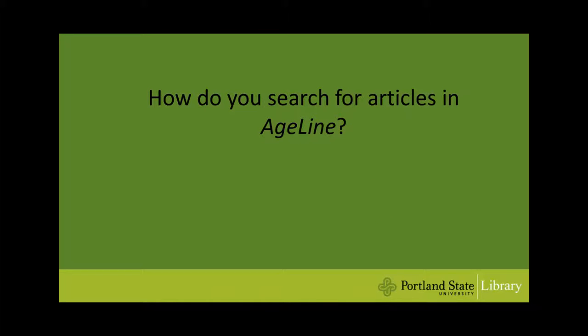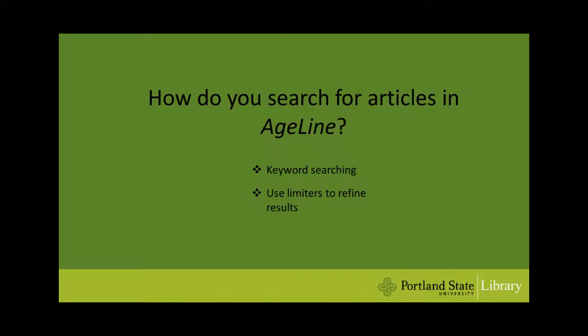How do you search for articles in Ageline? You can search by author, title, subject, or by keyword, as you would in other databases. And like other databases, you can use limiters to refine your results. However, Ageline does not give you the option to limit your results only to peer-reviewed sources, so you have to use some other strategies to find the best and most credible scholarly sources using this database.